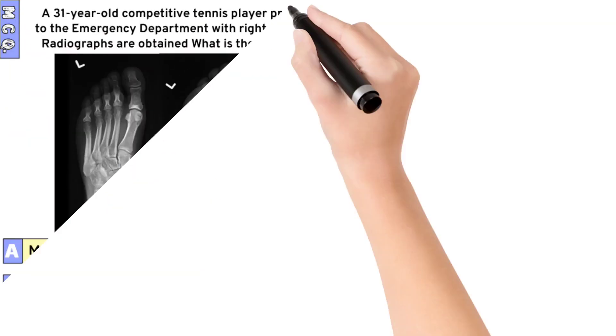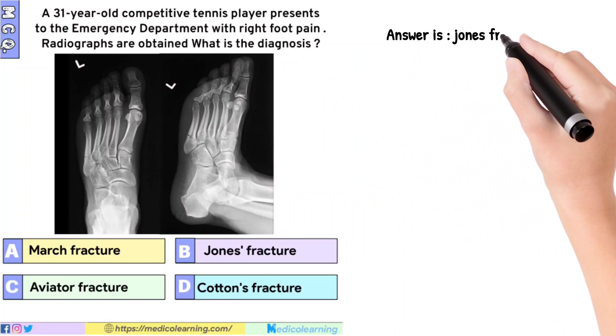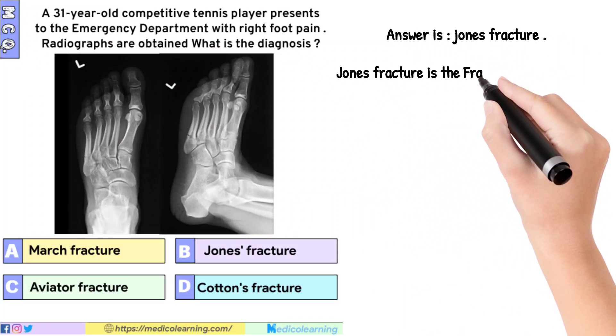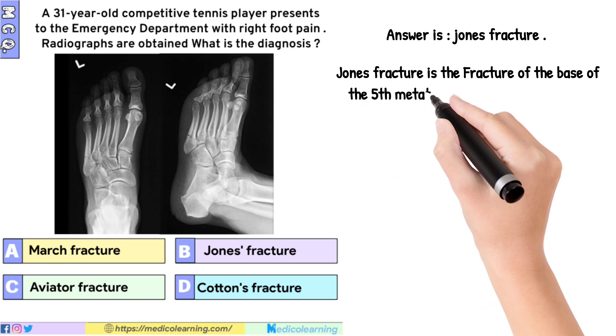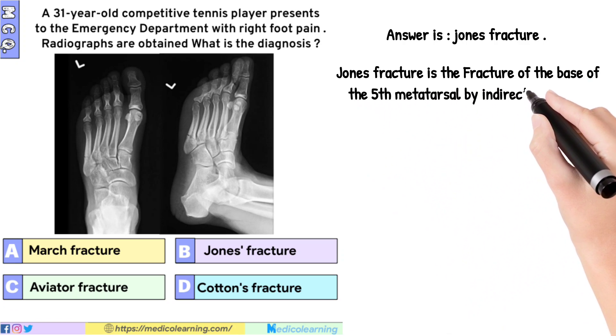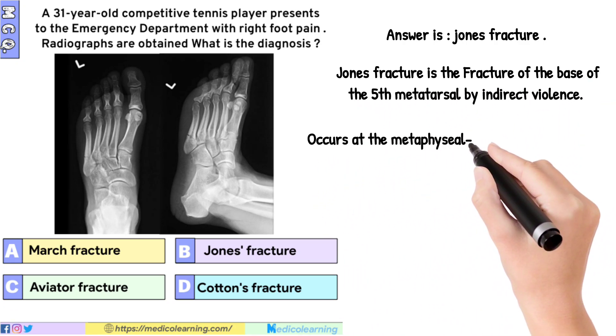In this question, the answer is Jones fracture. A Jones fracture is the fracture of the base of the fifth metatarsal by indirect violence, occurring at the metaphyseal-diaphyseal junction.